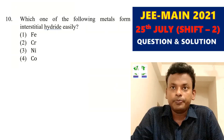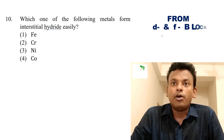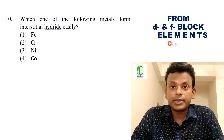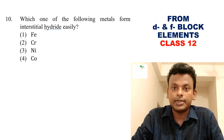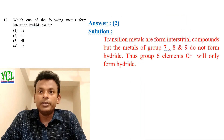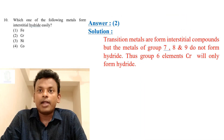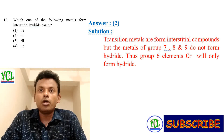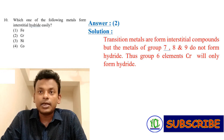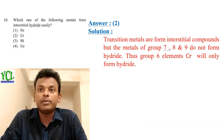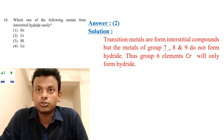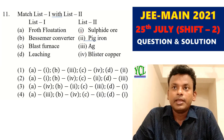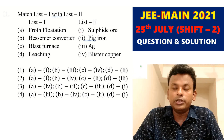Question 10: Which of the following metals form interstitial hydrides easily? The answer is option 2 — chromium. Transition metals form interstitial compounds, but metals of groups 7, 8, and 9 do not form hydrides. Thus group 6 element chromium will form hydrides. So option 2 is correct.